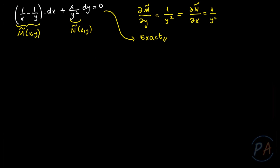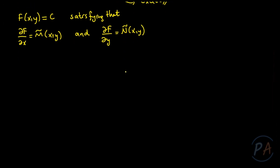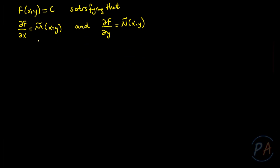The equation must have a solution of the form f of xy equals c, some constant c, satisfying that the partial derivative of f with respect to x equals M-tilde of xy, and the partial derivative of f with respect to y equals N-tilde of xy. My aim is now to determine f. Starting from the first condition: partial derivative of f with respect to x equals M-tilde, which is 1/x minus 1/y.